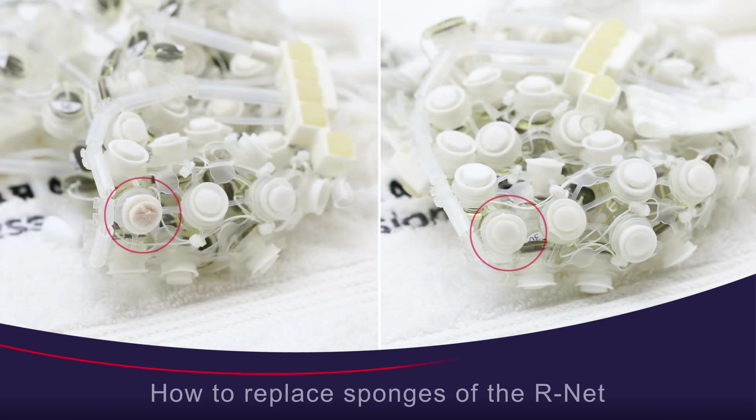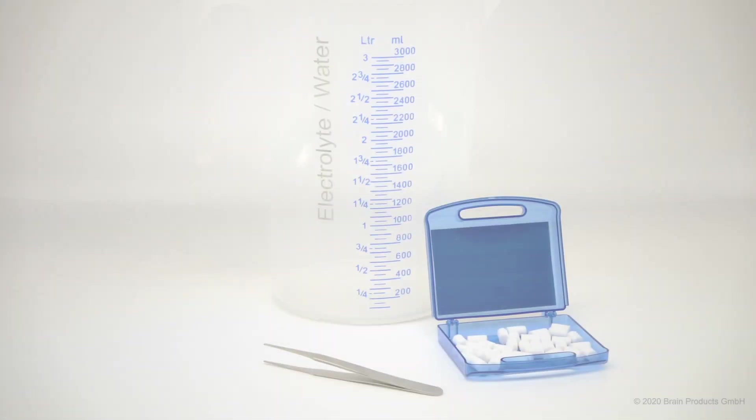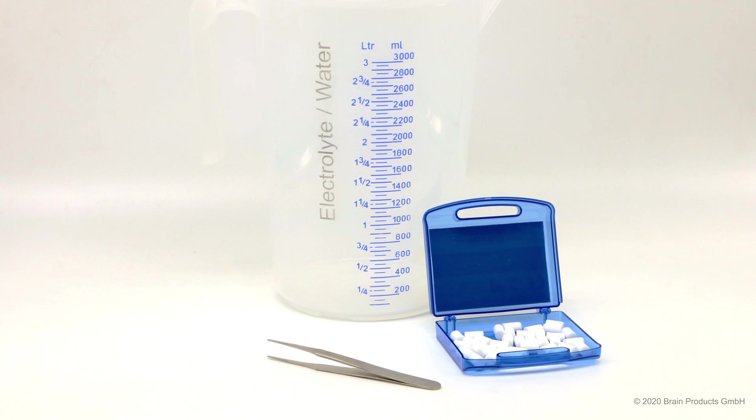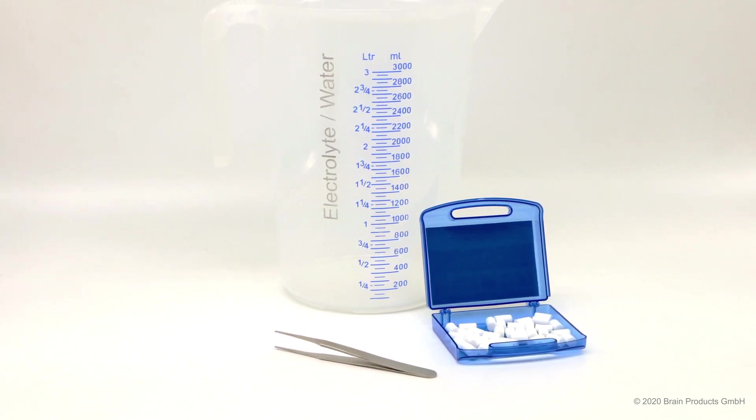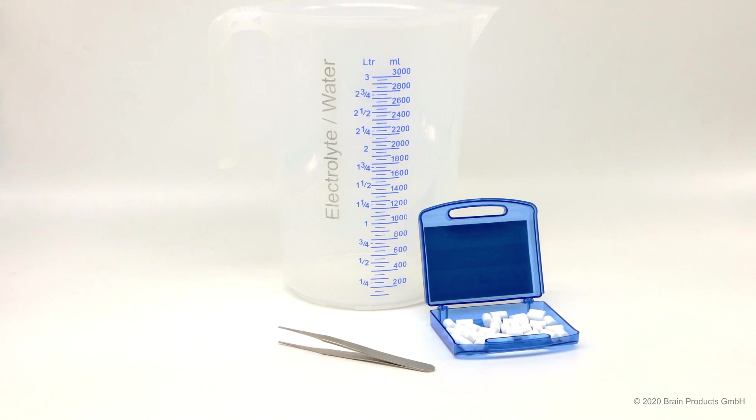In this video we will show you how to replace sponges of the R-Net. All you need to get started are the following items found in the R-Net Starter Kit: tweezers, extra sponges, a jug of water, and of course the R-Net.